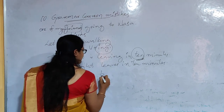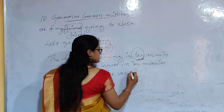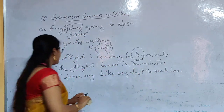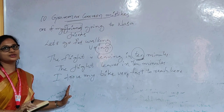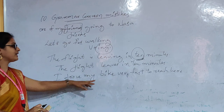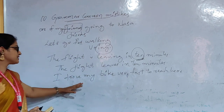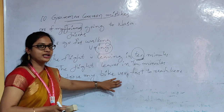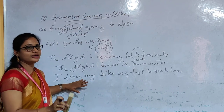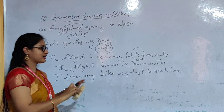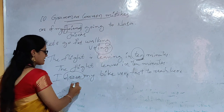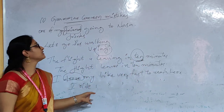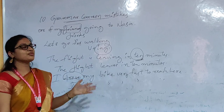Eighth mistake: 'I drove my bike very fast to reach here.' The wrong word here is 'drove'. We ride a bike and we drive a car. Whenever you are talking about a bike, you always ride it — you don't drive it. Riding a bike, driving a car. The correct sentence is: 'I rode my bike very fast to reach here.' These are a few of the English common grammar mistakes.